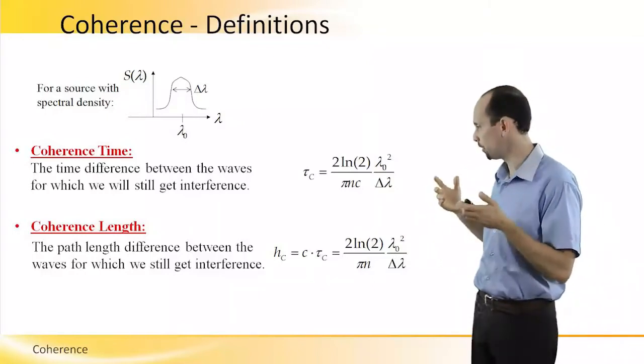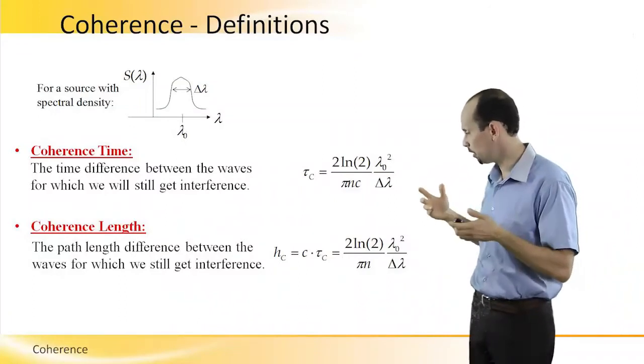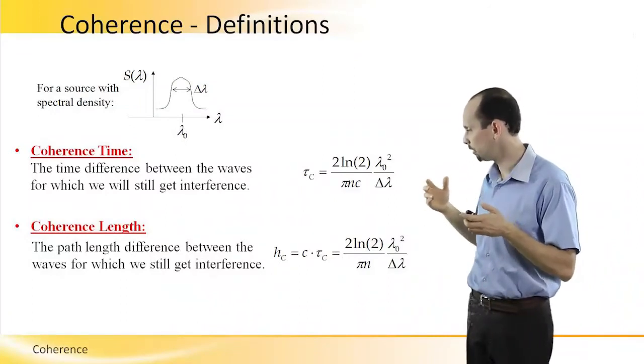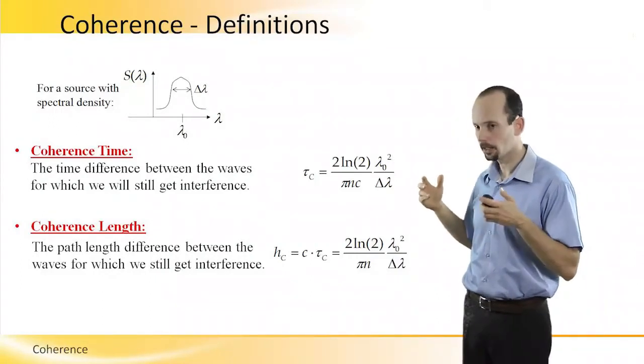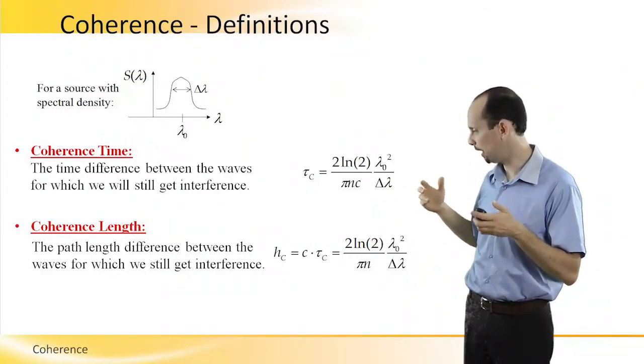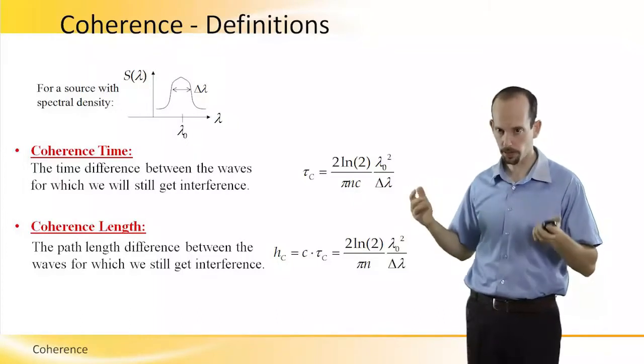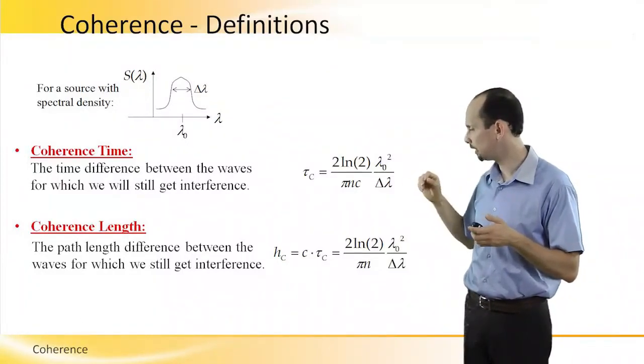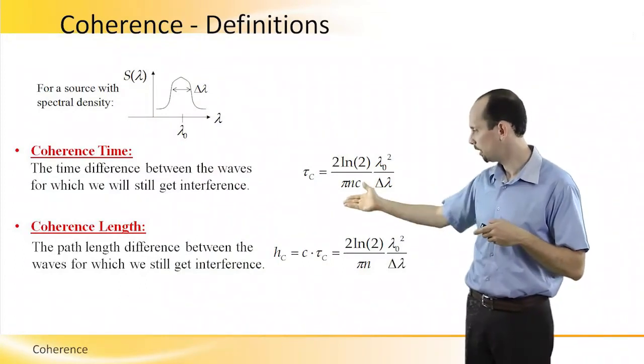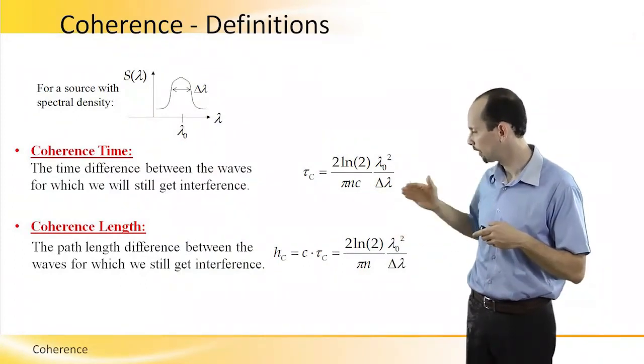And this coherence length is equal to a constant, which is 2 ln 2 over pi multiplied by n, where n is the refractive index, and this is multiplied by the central wavelength of the source, lambda zero squared, over delta lambda.